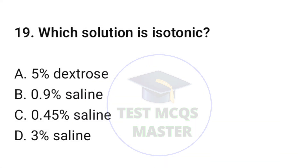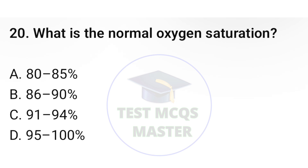Question number nineteen: Which solution is isotonic? The correct option is B: 0.9% saline. Question number twenty: What is the normal oxygen saturation? The correct option is D: 95 to 100%.